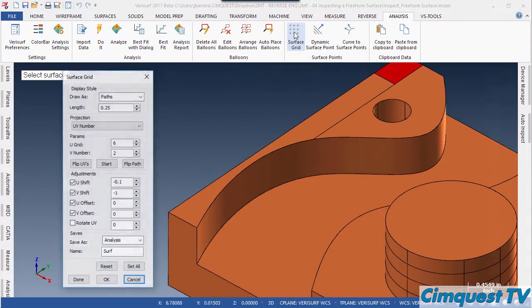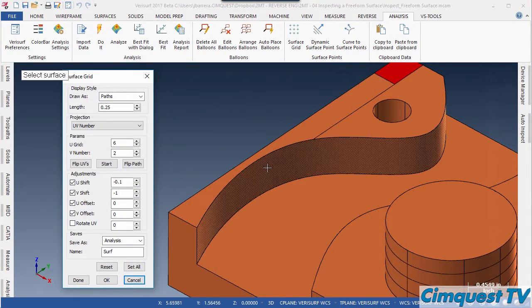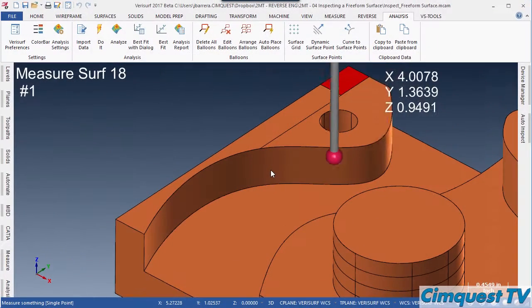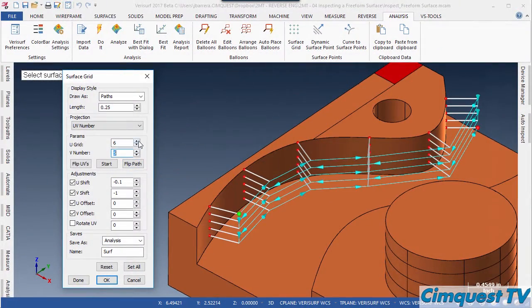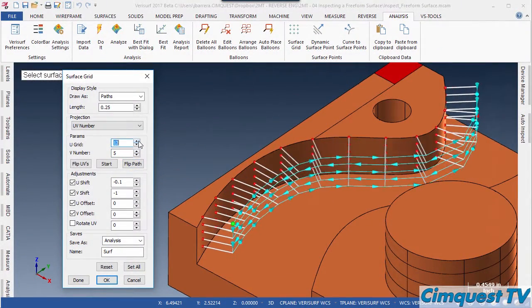Next, I add a surface grid of points on that freeform surface. The probe will scan and analyze each one of these points as it sweeps across the surface. Notice I can control the density of the scan points as well as the path direction the probe will take.